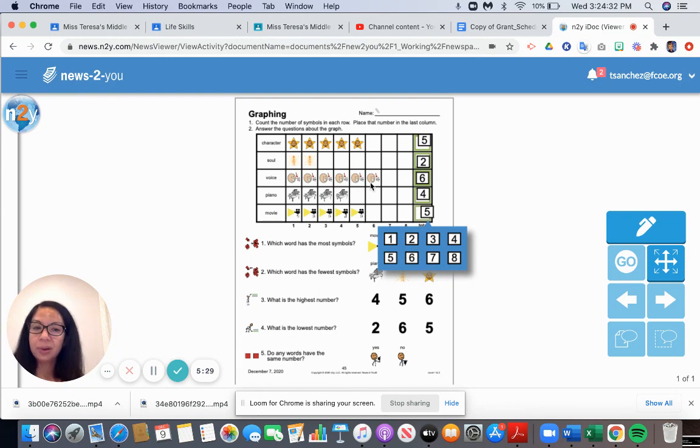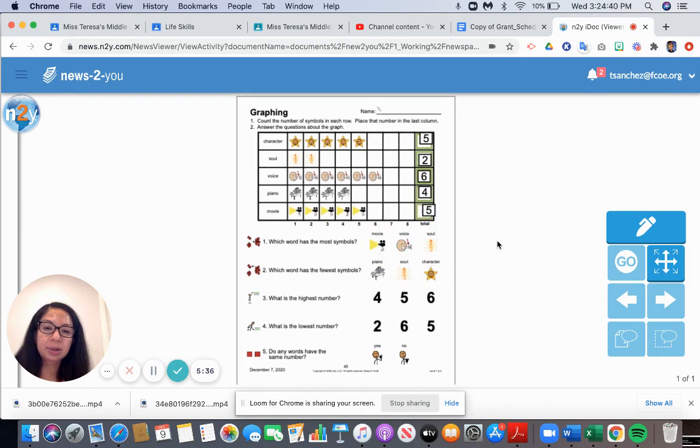There's six voices, and I don't see a number more than six. Let's see what our choices are. Is it movie, voice, or soul? I think it's voice. Voice has the most symbols. Voice is correct.